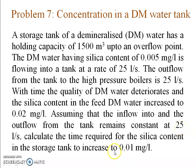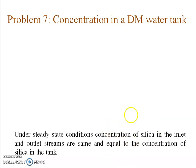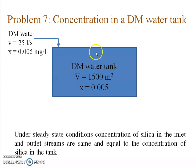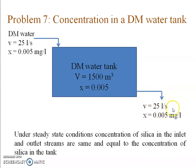Assuming inflow and outflow remain constant at 25 liters per second, we are asked to calculate the time required for the silica content in the storage tank to increase to 0.01 mg per liter. Under steady state conditions, the concentration of silica in the outlet and inlet streams are the same. Drawing the flow chart: the tank volume is specified, DM water enters at 25 L/s with silica concentration 0.005 mg/L. Assuming the tank is perfectly mixed, the silica concentration within the tank is also 0.005 mg/L.